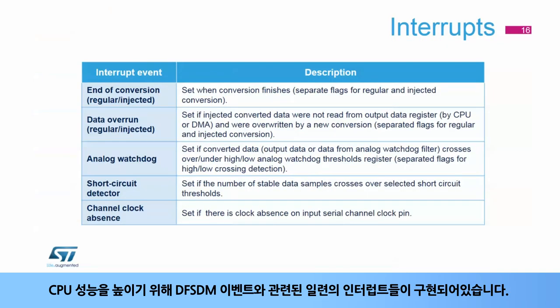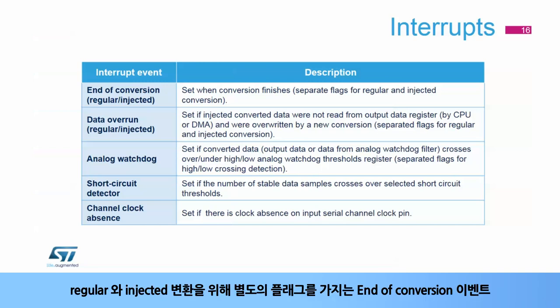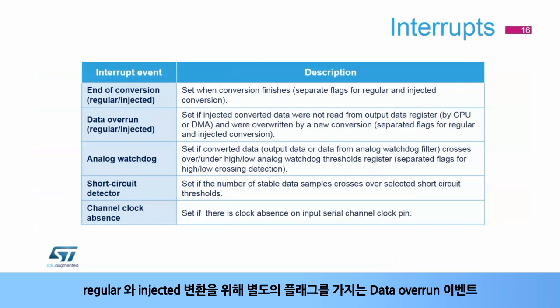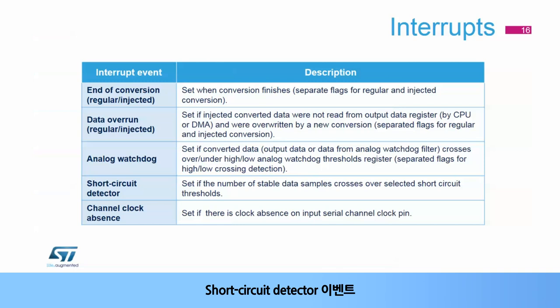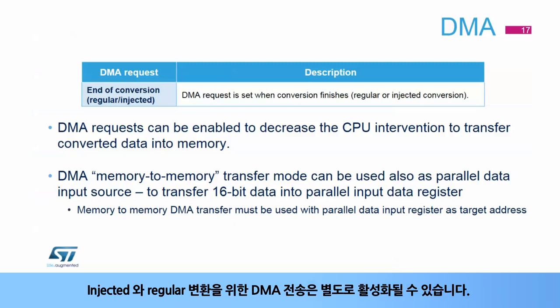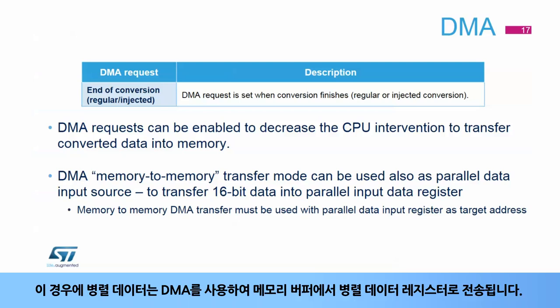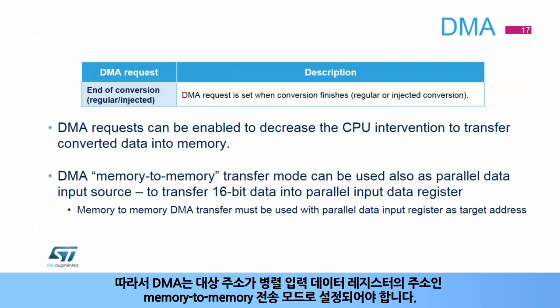A set of interrupts related to DF-SDM events has been implemented to increase CPU performance. Interrupt sources include: end of conversion events with separate flags for regular and injected conversions, data overrun events, analog watchdog events, short circuit detector events, and channel clock absence events. To decrease CPU intervention, conversions can be transferred into memory using DMA. DMA transfers for injected and regular conversions can be enabled separately. The DMA can also be used for fast data transfers into parallel data registers, configured in memory-to-memory transfer mode with the target address being the parallel input data register.